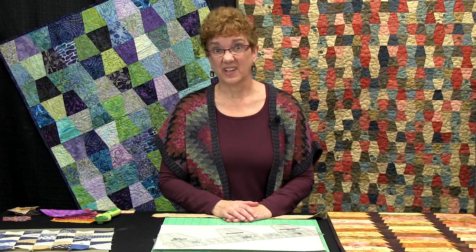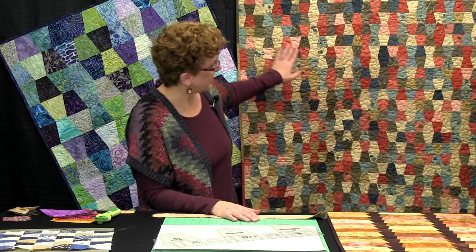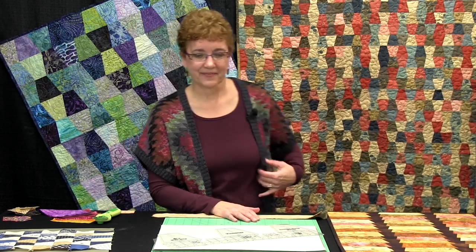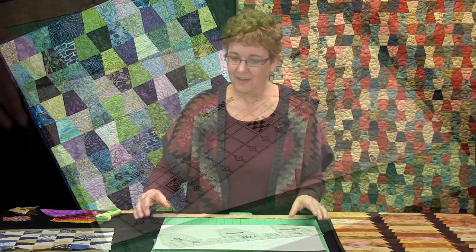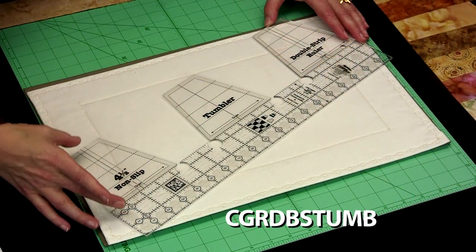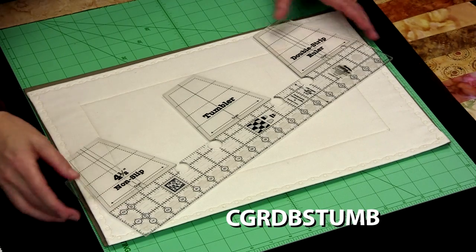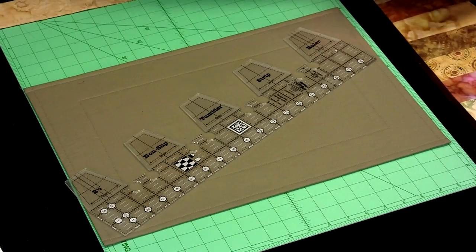With the single strip ruler, we get to work with 2½ inch strips, and this is a quilt made using that. Let's look at the ruler. First, here's the double strip. See, 4½ inch high, and here's our little single strip.